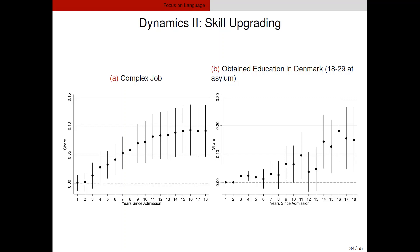The graph on the right shows whether people who got extra language training were more likely to get additional education, typically a technical degree in Denmark. The big effect seems to happen after year 13 or 14 — which for the 1999 reform corresponds to around 2011 or 2012, the years of the Great Recession in Europe. Our interpretation is that people with better language moved to more complex jobs, and during the recession some may have lost jobs and retrained, or used this time to increase their formal education. In the long run they end up with 10 to 15% higher probability of having obtained Danish education, which gives them an extra boost.